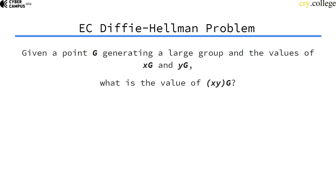Given a point G, and G is generating a large group, and the attacker has the access to the scalar multiplication of x and G and y of G. Can the attacker actually compute x times y of G?